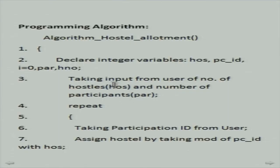The algorithm takes the number of hostels and number of participants as input. For each participant, we take their ID — for example 1221 — and extract the last digit by taking mod of the total number of hostels. For example, 1220 mod 4 equals 0. Since hostel 0 doesn't make sense, we increment by 1, so hostel 1 is assigned to that participant.